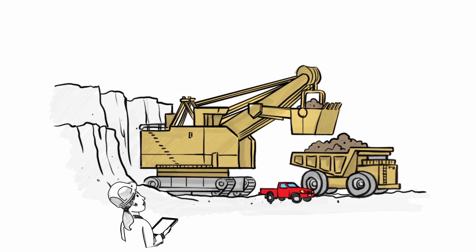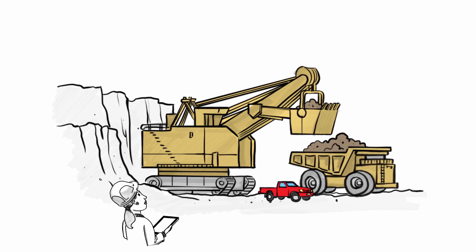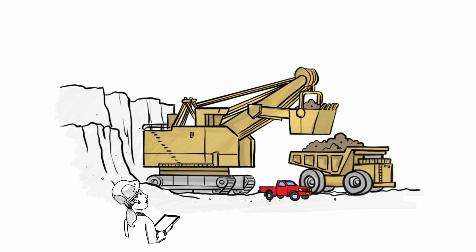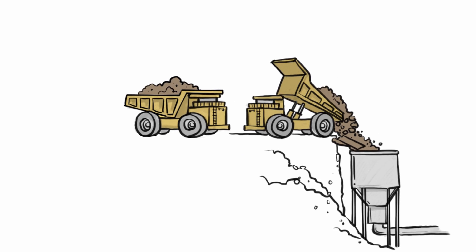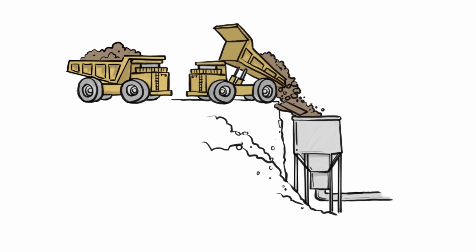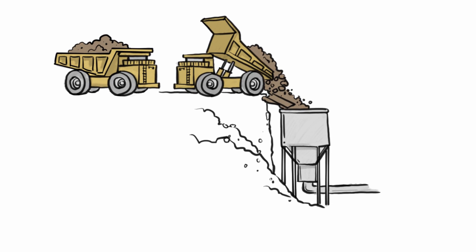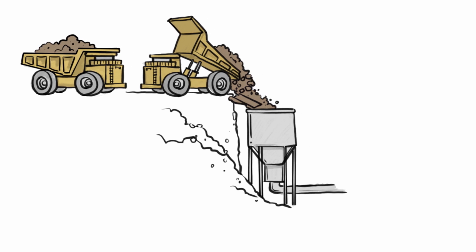Then, huge shovels scoop the oil sands from the ground and dump it into 400-ton heavy hauler trucks. The oil sands are deposited into a crusher where it is crushed and mixed with hot water and then sent by pipeline to the extraction plant.